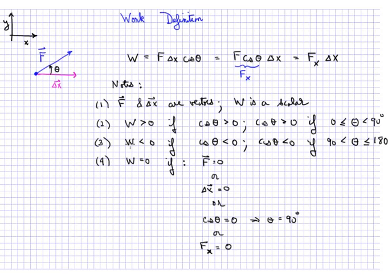Thirdly, W is less than zero if cosine theta is less than zero. Cosine theta is less than zero if theta ranges from 90, not including 90, up to and including 180. Recall that the cosine of 180 is minus one and the cosine of zero is plus one.